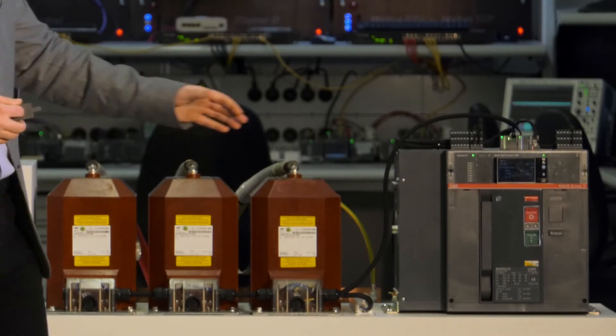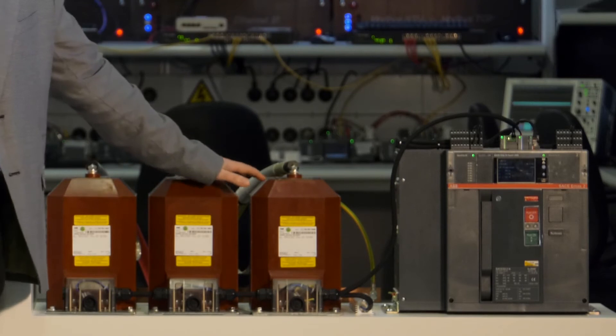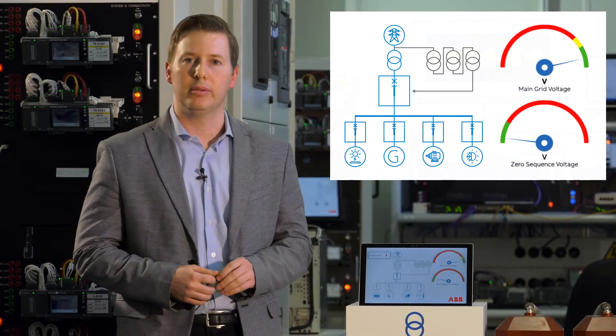Here we have the electrical scheme of the low voltage microgrid connected in parallel with the medium voltage grid by means of a medium voltage low voltage transformer. As you can see, here we have our EMAX2 air circuit breaker installed immediately downstream the transformer as the microgrid main circuit breaker.